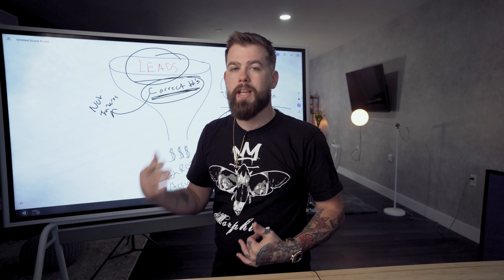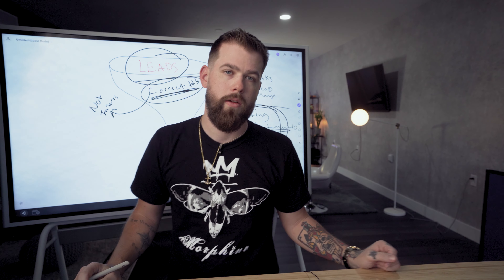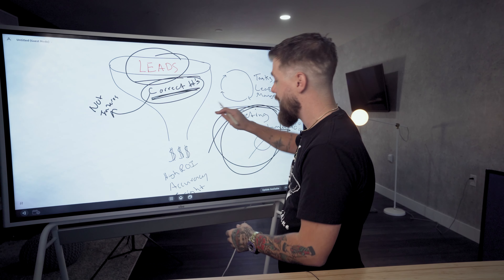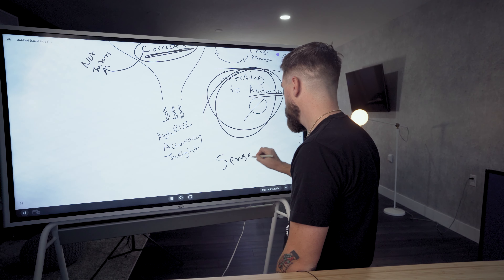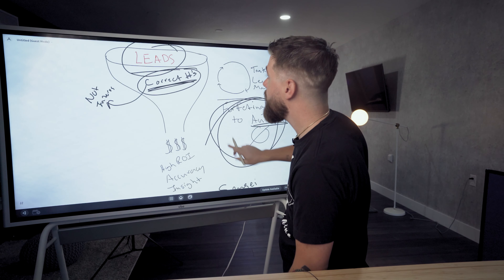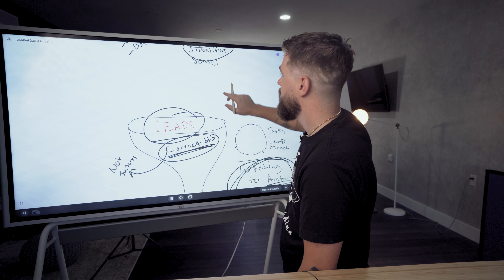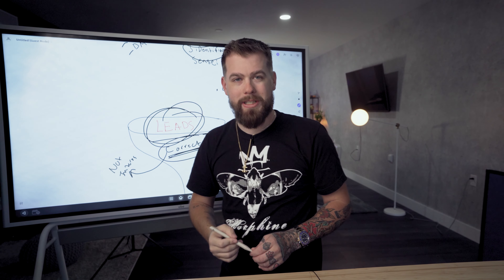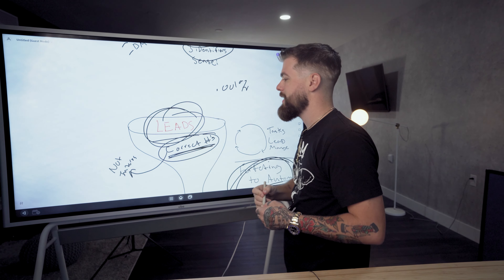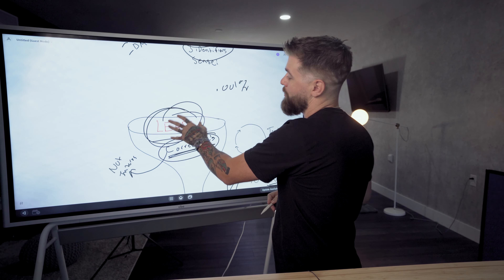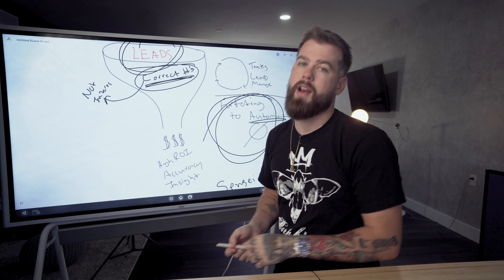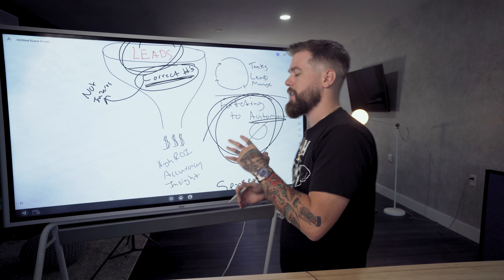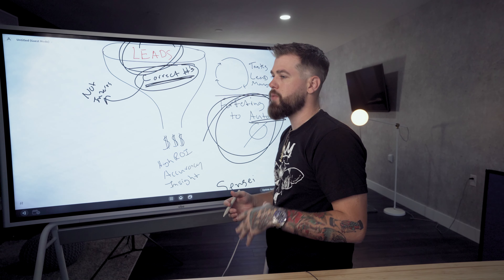Don't forfeit the conversation to automation right away — let it happen. That doesn't mean letting them talk your ear off for 45 minutes, but you should continue to nurture that lead using the Sensei Flow — the same flow you use for your top one percent — because your leads are your top 0.001 percent. They're the most important contacts you have, yet people give them up to automated text messages.